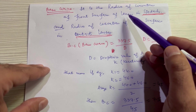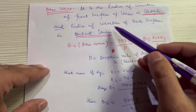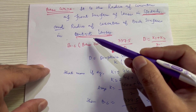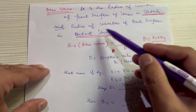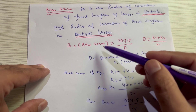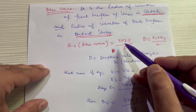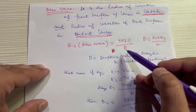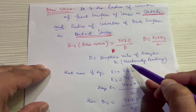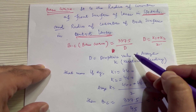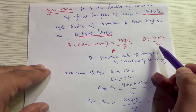Base curve is the radius of curvature of the front surface of the lens in spectacles, and the radius of curvature of the back surface in contact lenses. There is a formula for calculation of base curve: base curve equals 337.5 divided by D, where D is the dioptric value of the average keratometry reading. D is calculated as K1 plus K2 divided by 2.